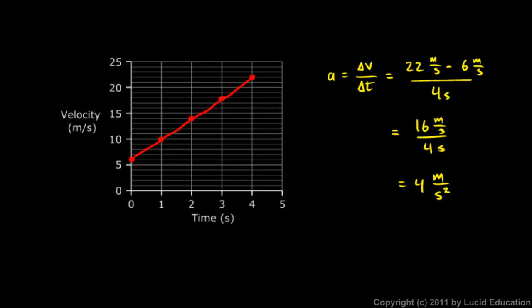This graph shows the velocity of the car at any given moment. Take note that this is a velocity graph — a graph of velocity versus time. In other words, it shows how fast it is moving at any given moment. This is different from the graphs we looked at earlier, which were graphs of position versus time — graphs that showed where it was, what its position was at any given moment. This is a graph that shows how fast it's moving.